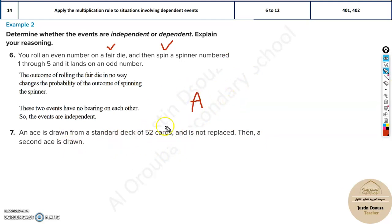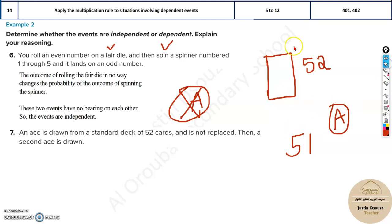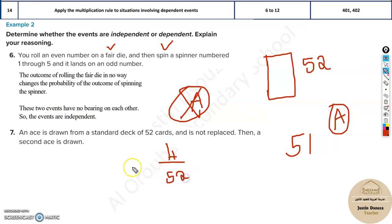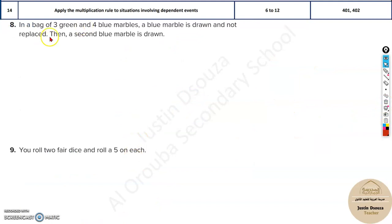An ace is drawn from a standard deck of 52 cards and is not replaced. There were 52 cards, but now one is gone, leaving 51. Then another ace is drawn. Does the probability change between the first and second event? Absolutely — in the first event there are four aces out of 52, but the second time there are only three aces and 51 cards. The probability changes, so these events are dependent on each other.